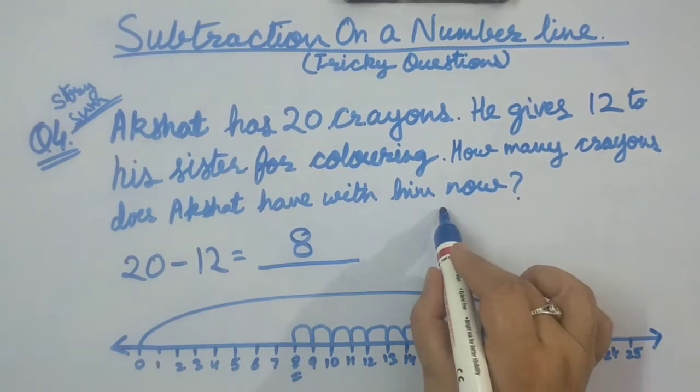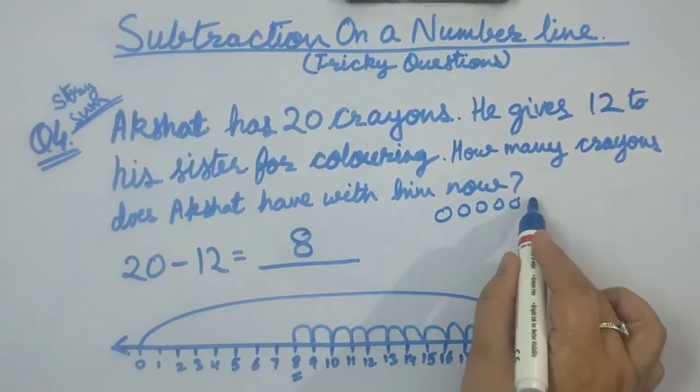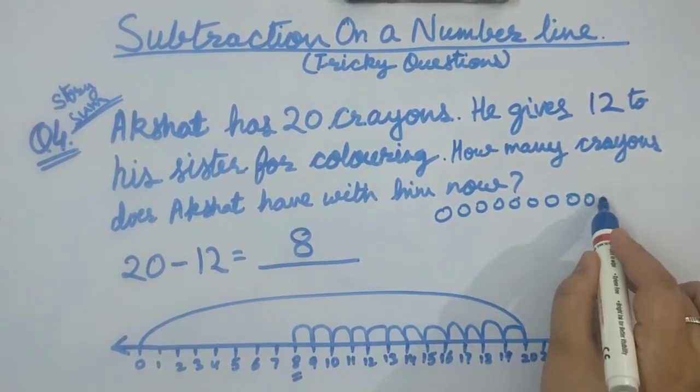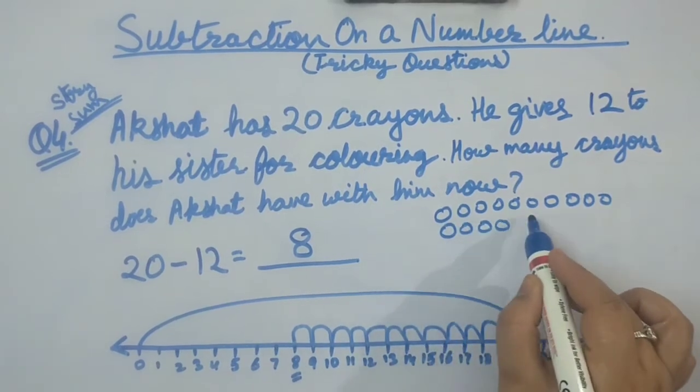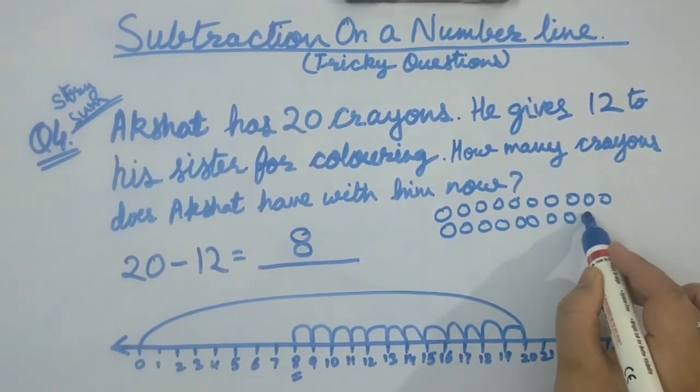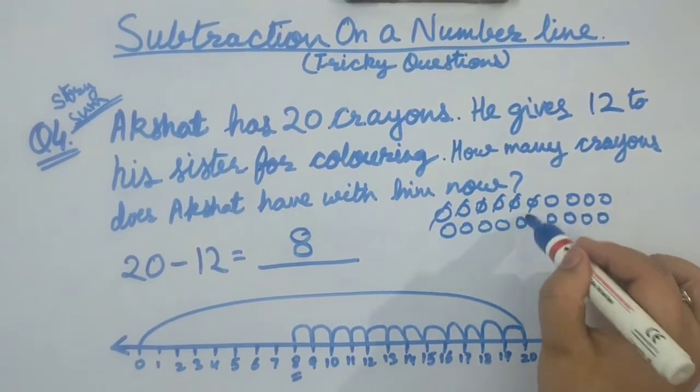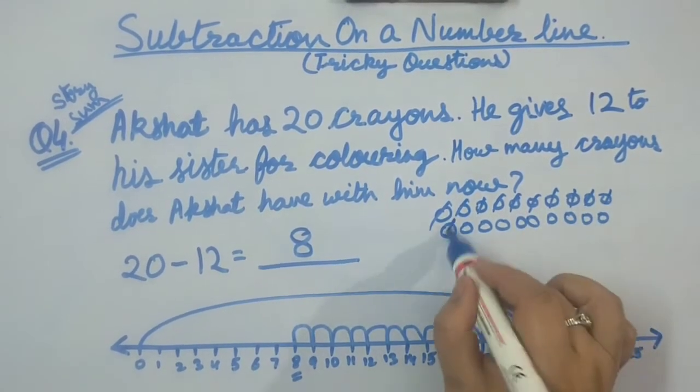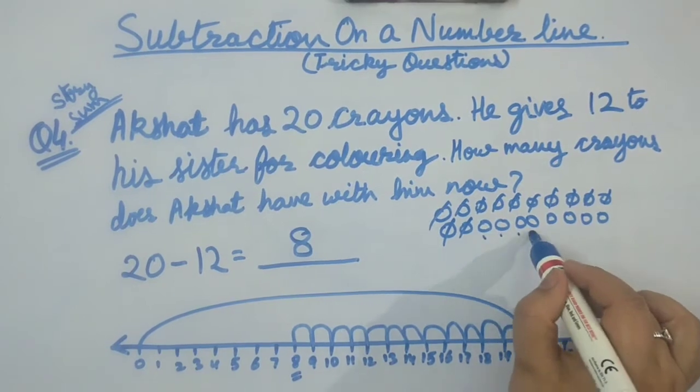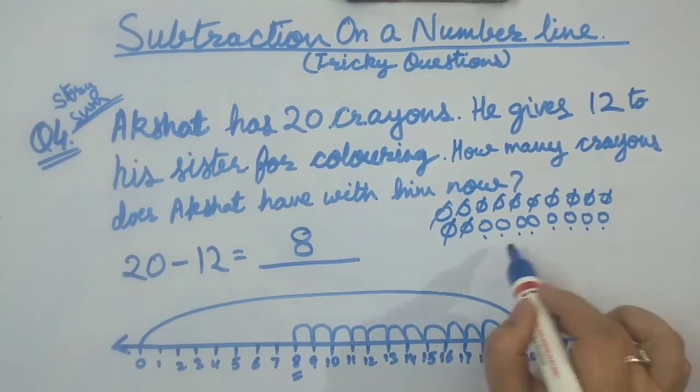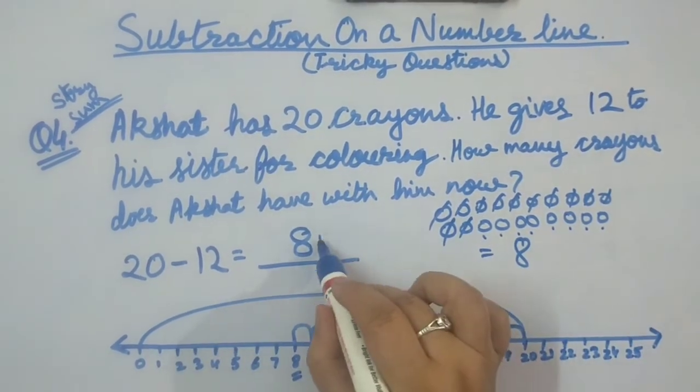Checking on circle method. Drawing circles 1 through 20. Cutting 12 circles by counting 1, 2, 3, 4, 5, 6, 7, 8, 9, 10, 11, 12. Counting remaining circles: 1, 2, 3, 4, 5, 6, 7 and 8. Our answer came out to be 8. Yes, it is correct.